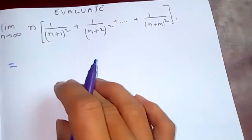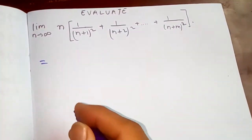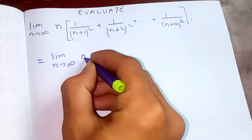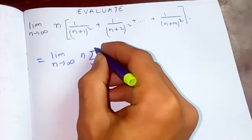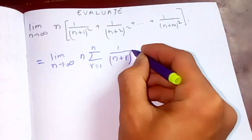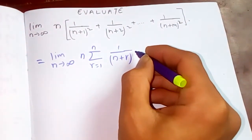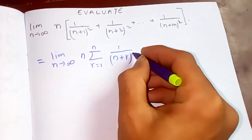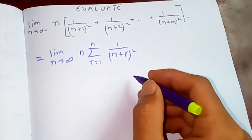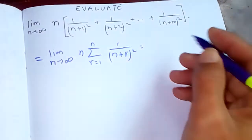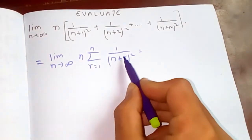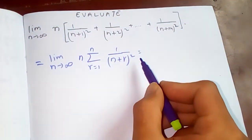Let's write this limit in terms of a sum. You can plug it like this — when r equals one you get this, when r equals two you get the next term, and so on.